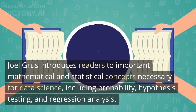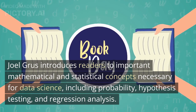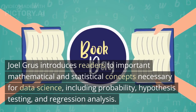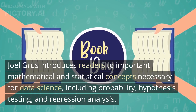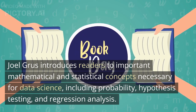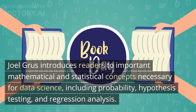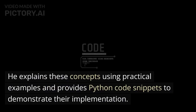Joel Grus introduces readers to important mathematical and statistical concepts necessary for data science, including probability, hypothesis testing, and regression analysis. He explains these concepts using practical examples and provides Python code snippets to demonstrate their implementation.